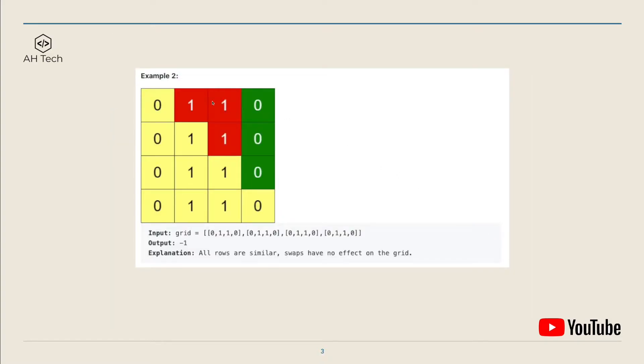And the next example, for the third row, the third column, because there's no zeros at all in all columns, in this case it's not possible to make the grid valid. So the output will be negative one for this case.